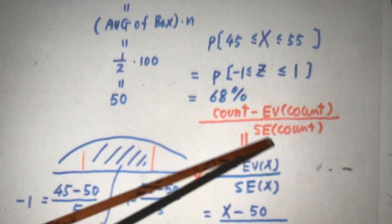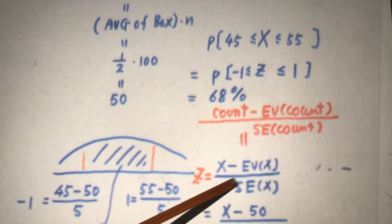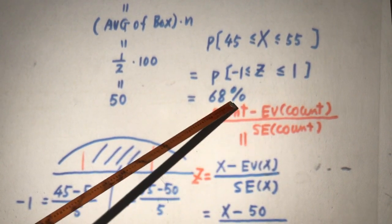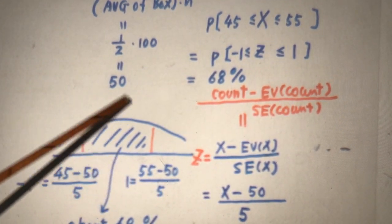So EV(X) is what? Well, X is count, right? EV(X) is EV(count). SE(X) is SE(count). So that is X, what's EV(count)? It's 50.